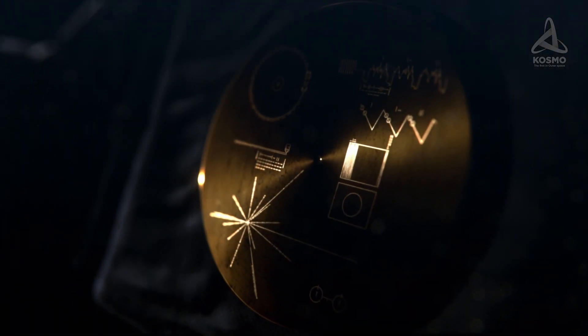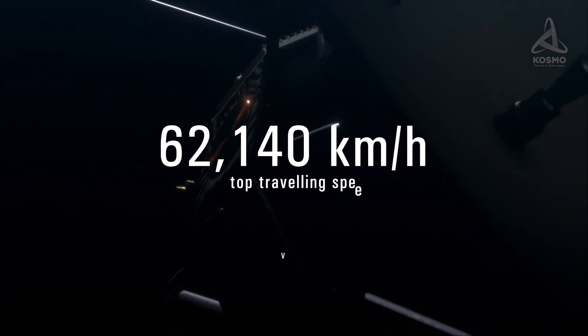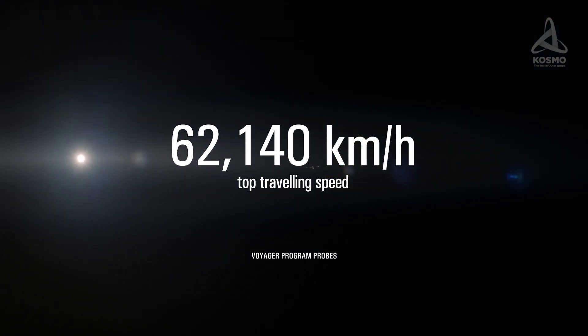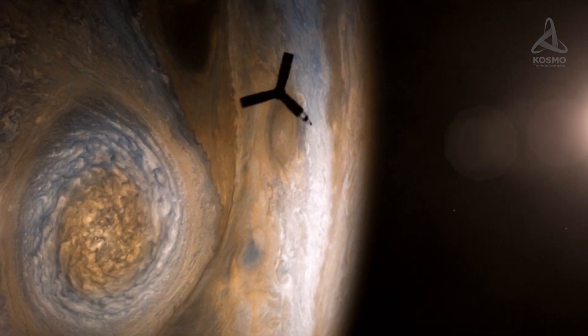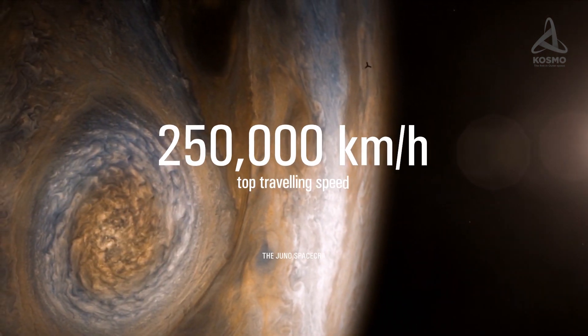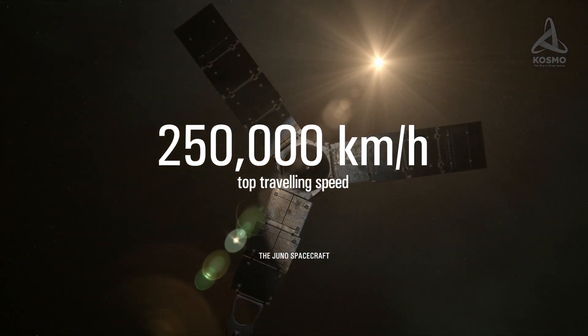The Voyagers were among the pioneer spacecraft to set out in space, with their top traveling speed reaching 62,140 km per hour. Juno is the second super-fast space probe worth mentioning, which approached Jupiter at 250,000 km per hour.